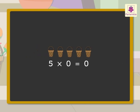Thus, when we multiply a number with zero, we always get the product as zero.